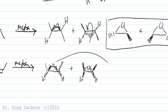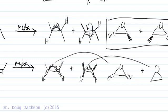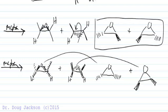And let's redraw these again. And we see that with the cis, we get two mirror images that are superimposable. And they are meso.